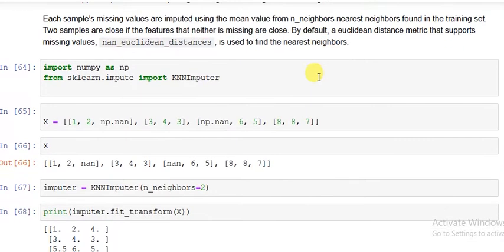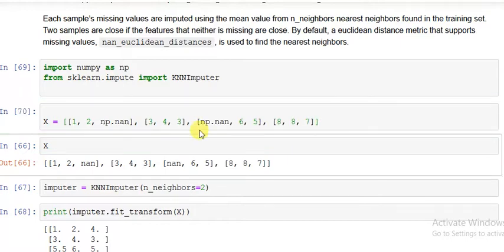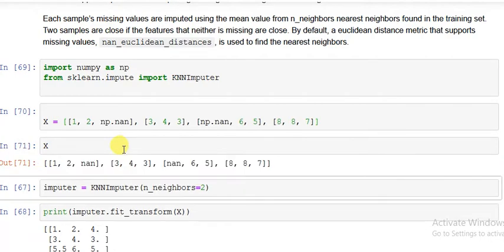Now let's see the code. We import the libraries: numpy as np, and from sklearn.impute import KNNImputer. Now let's create some data: x equals [[1, 2, np.nan], [3, 4, 3], [np.nan, 6, 5], [8, 8, 7]]. I deliberately put two NaN values. When we print it, it looks like this.